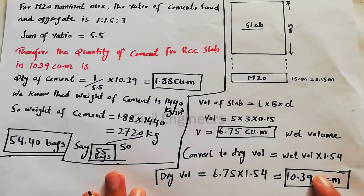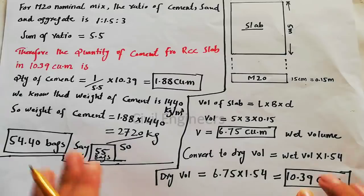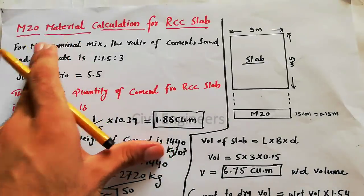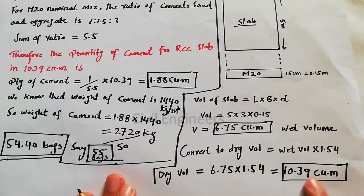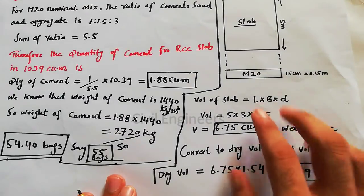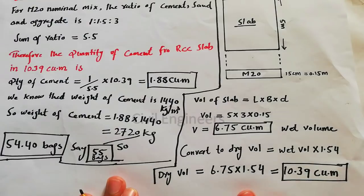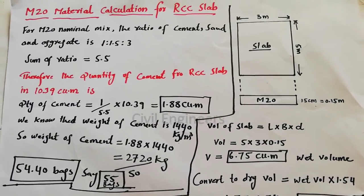This is the volume, so in this volume we will find M20 material calculation for RCC slab. This is the calculation for this slab, 10.39 dry volume.